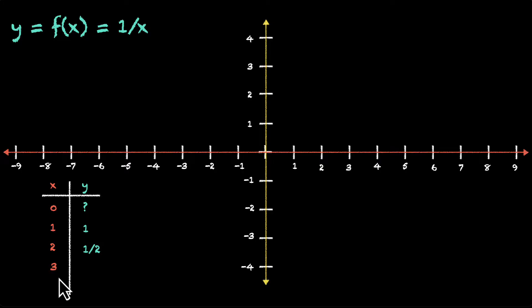For 3, we'll have 1 third. Similarly, for a large value, let's say 9. We'll get 1 by 9. So let's plot these points. We have (1, 1). We have (2, 1/2). So we're moving here. And then (3, 1/3). So moving in this direction.